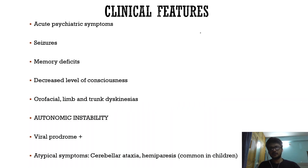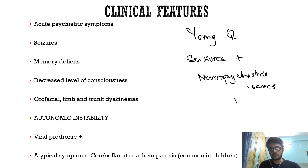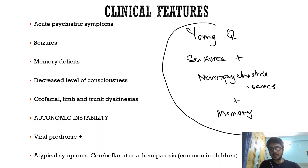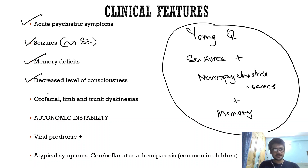Whenever you have a young female patient presenting with new-onset seizures or status epilepticus, along with neuropsychiatric issues and memory loss, always think of anti-NMDA receptor antibodies. The presentation includes an acute neuropsychiatric syndrome, seizures — very commonly as status epilepticus — memory deficits, decreased level of consciousness, and orofacial, limb, and trunk dyskinesia.